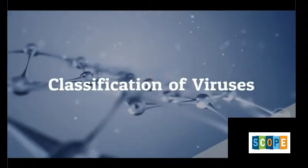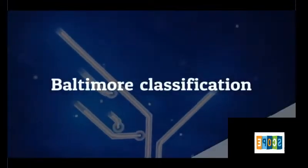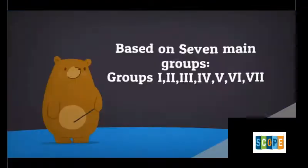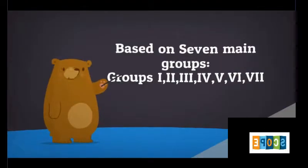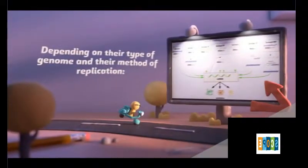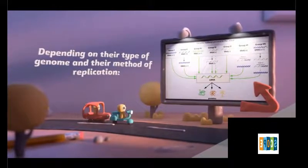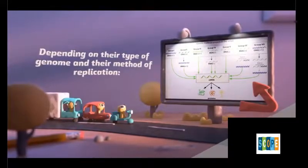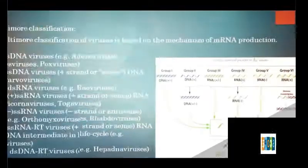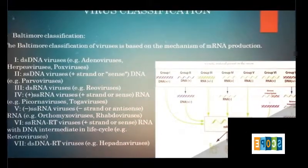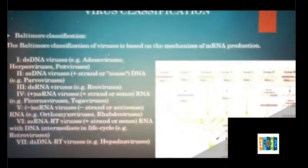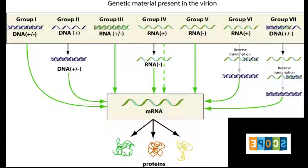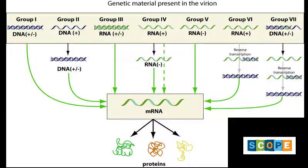Baltimore Classification of viruses is based on seven main groups, depending on their type of genome and their method of replication. Group 1: Double-strand DNA viruses — examples include adenoviruses, herpesviruses, and poxviruses.